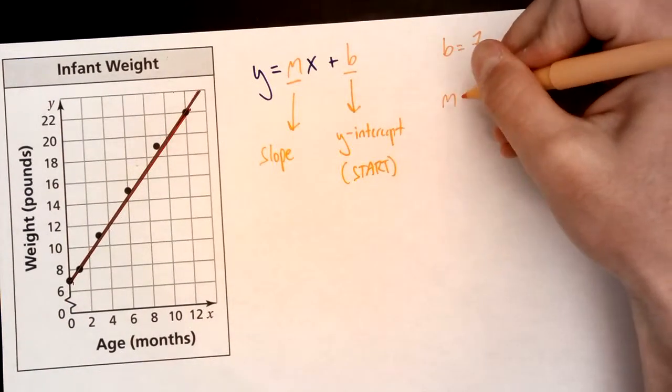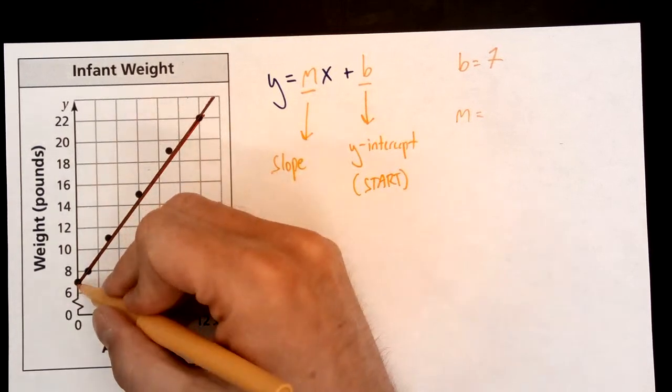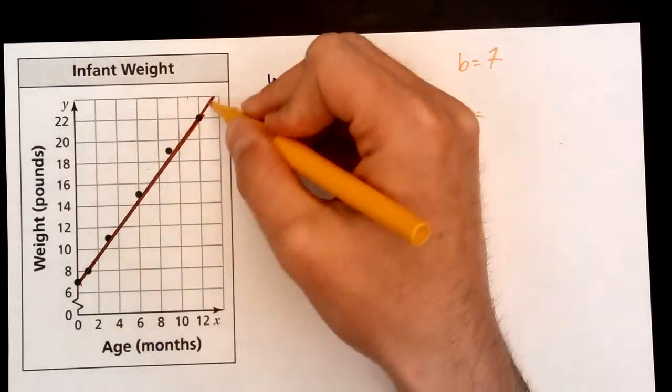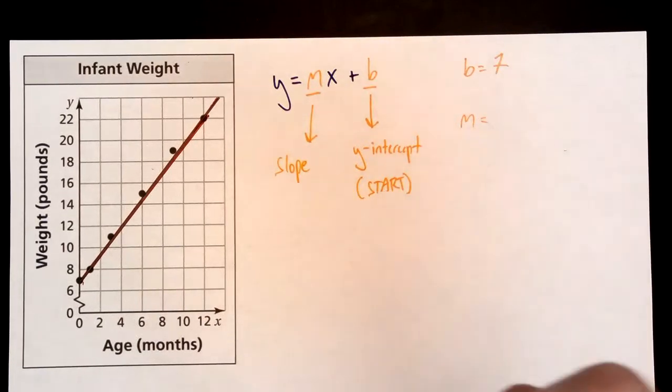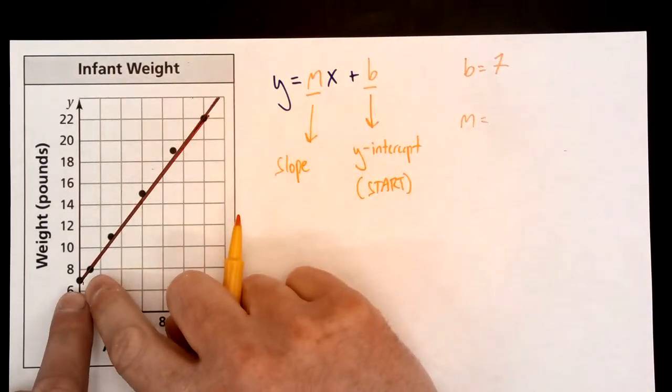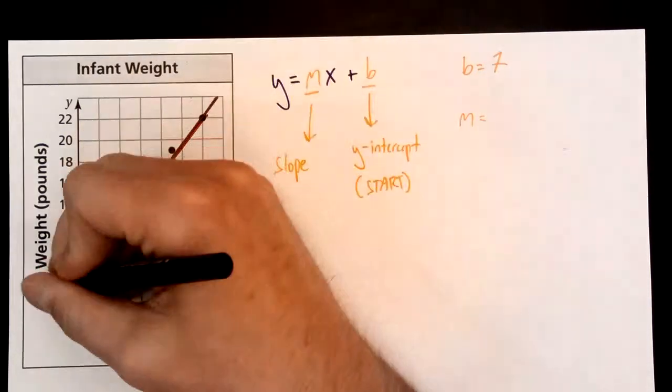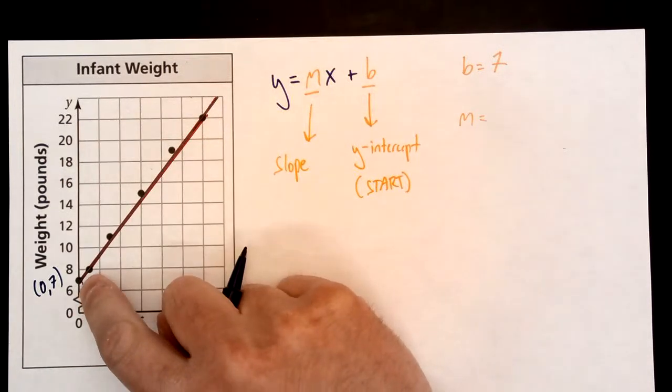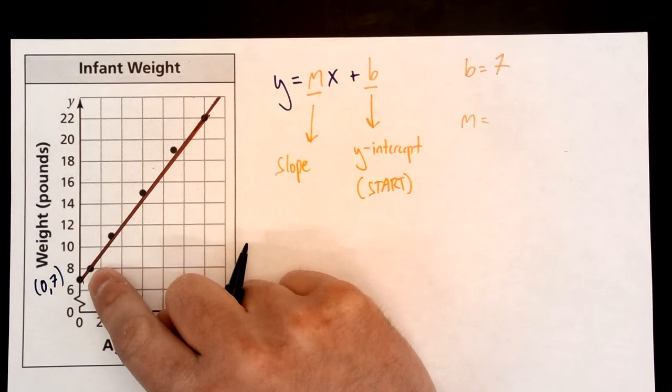Now, the next thing I need to do is find this slope, and then I can write my equation. To find the slope, I want to find two points where I know the coordinates. That's going to help me find the slope. So I'm noticing, why don't I use that y-intercept? Let's actually use that y-intercept. The coordinates there are (0, 7), and then that point might work, (1, 8). That would probably work as well.